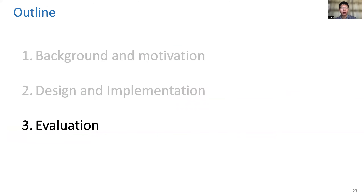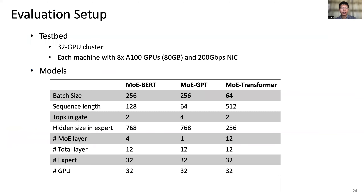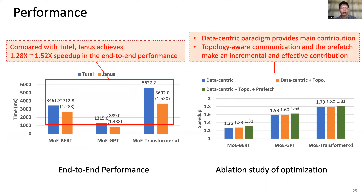Our evaluation is performed on a 32-GPU cluster. We evaluate end-to-end performance on three models including GPT and transformer with MoE. JANUS requires less iteration time than the tutor baseline. We also conduct an ablation study of the optimizations. Compared with the expert-centric baseline, the data-centric paradigm provides the main contribution, and topology-aware communication and prefetch strategy make incremental and effective contributions.